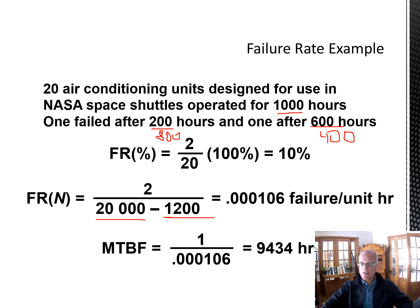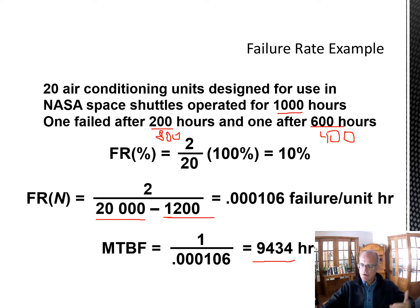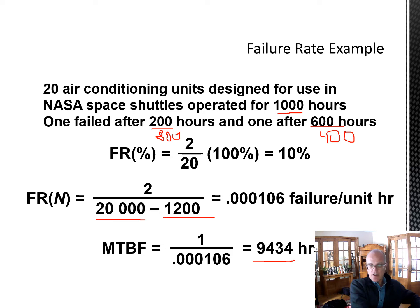Given that failure rate of 0.000106, these are units going into space so that might still be high. The mean time between failures is the inverse of that: 9,434 hours between failures. So if the shuttle is going to operate for more than 9,000 hours, we may have to use several units — and that's how we build redundancy.